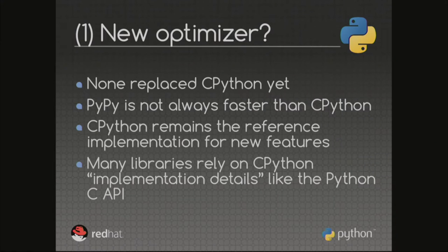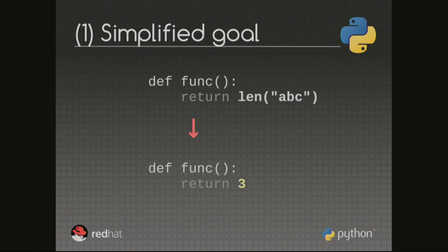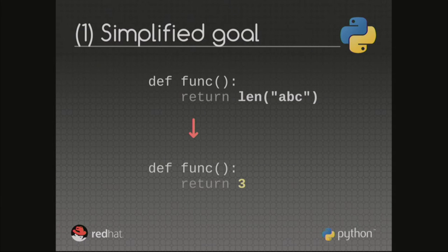In Python, we now have a ResourceWarning to detect that issue. To simplify the goal of Fat Python: the idea is to replace a call to the len function computing the length of the string 'ABC' and replace it directly with the result, the number 3. The goal looks quite simple, but I will explain why it's not as simple as you might expect.